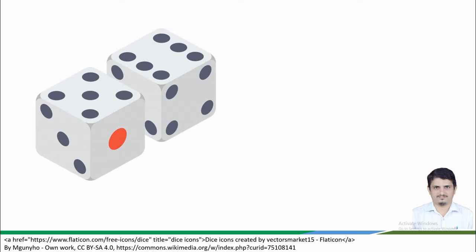The macrostate doesn't care about the specific number on the die. It only considers the broader outcome.